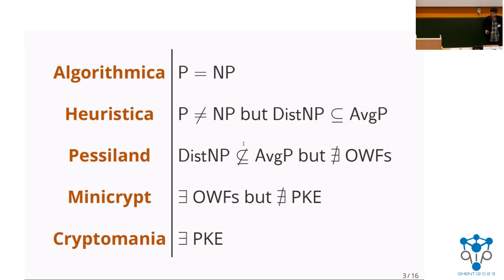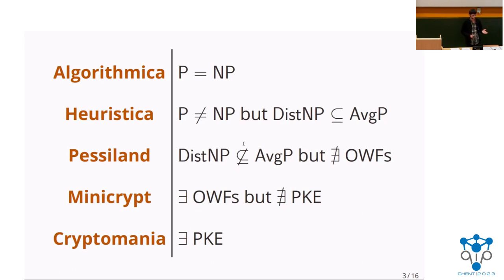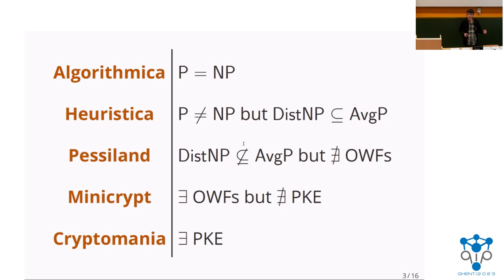He basically observed in this paper that there are five possible resolutions to the P versus NP problem that have interesting practical consequences. These are sometimes called Impagliazzo's five worlds. In order they are: Algorithmica, where P equals NP; Heuristica, where P is different from NP but NP is easy on average; Pessiland, where NP is hard on average but there are no one-way functions; Minicrypt, where there are one-way functions but no public key encryption; and finally Cryptomania, where there are one-way functions and also stronger forms of encryption like public key encryption.